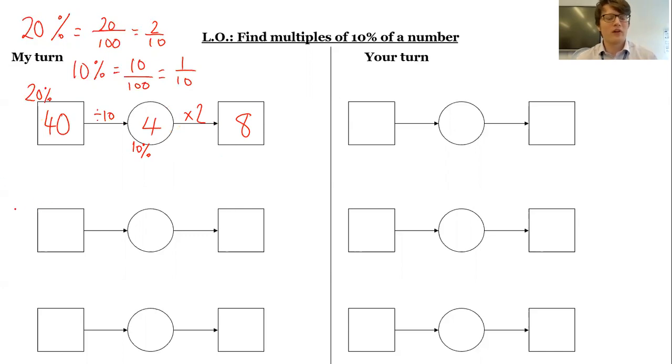What if we wanted to find 70% of 40? Well, 70% is the same as 7 tenths. So again, I'm going to start by dividing by the denominator, divide by 10, which gives me 4. Now this is my 10%, but I don't want 10%, I want 70%. 10 to 70, I need to times by 7. 4 times 7 is 28.